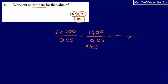So if I multiply this by 100, that gives me 5. If I multiply the top by 100 as well, then that's going to give me 140,000.